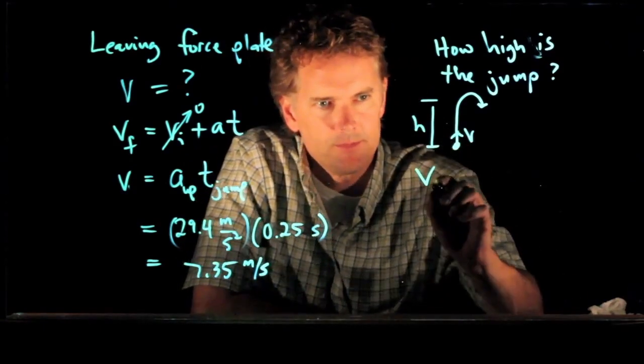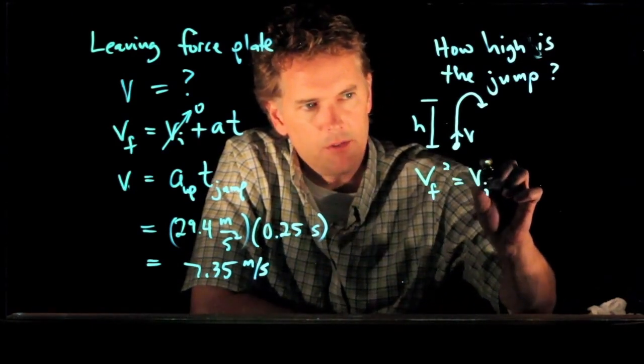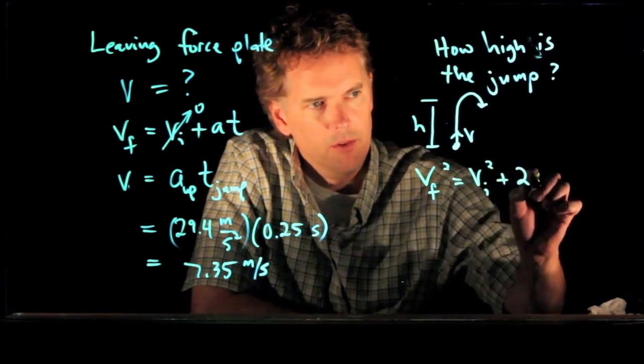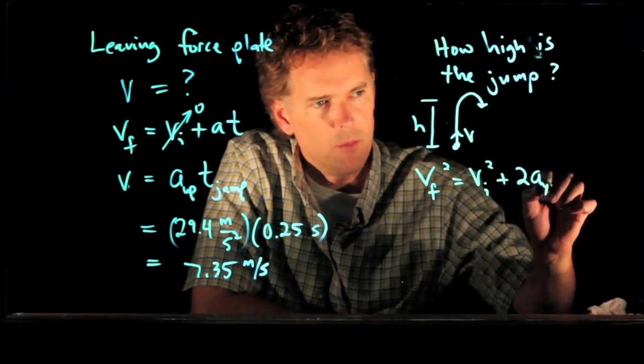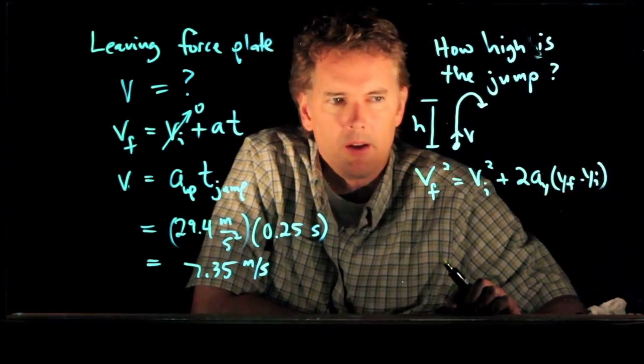V_F squared equals V_I squared plus 2 times the acceleration in the Y direction times Y_F minus Y_I. That's one of our kinematic equations.